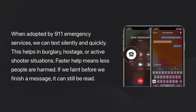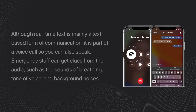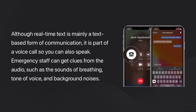When adopted by 911 emergency services, we can text silently and quickly. This helps in burglary, hostage, or active shooter situations. Faster help means fewer people are harmed. If we faint before we finish a message, it can still be read. Although real-time text is mainly a text-based form of communication, it is part of a voice call so you can also speak.